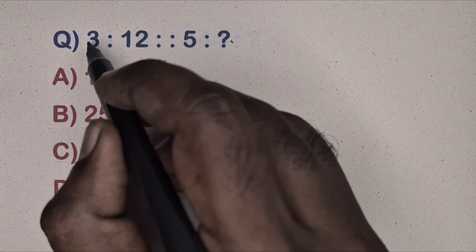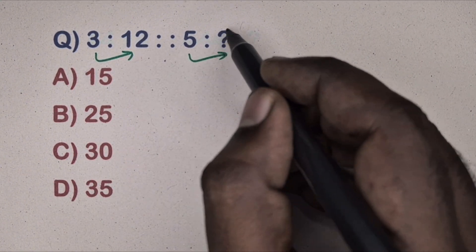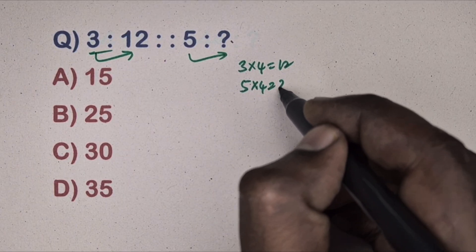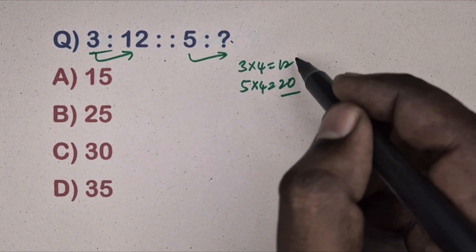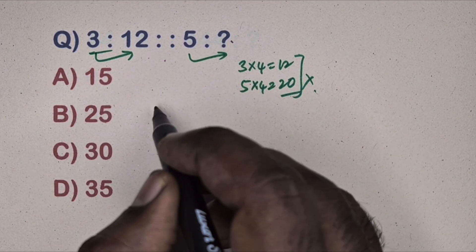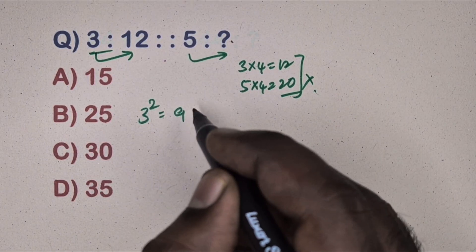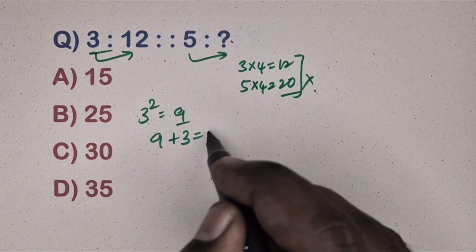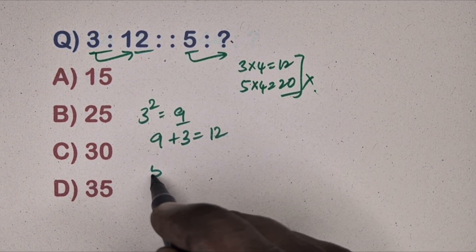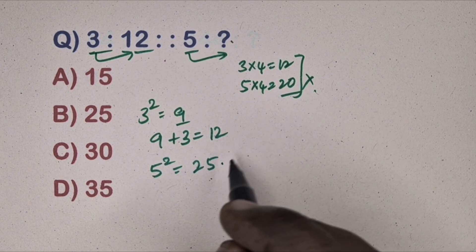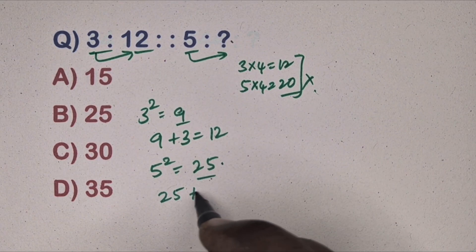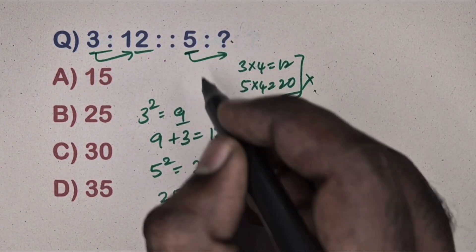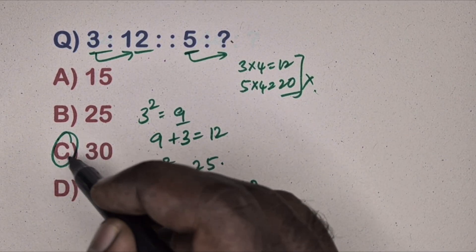Next question: 3 is related to 12, 4 is related to which number. First try: 3 × 4 = 12, then 5 × 4 = 20, but 20 is not in the options — wrong method. Correct method: 3² = 9, add the same number 3 to get 12. Same way, 5² = 25, add 5 to get 30. Option C is the correct answer.